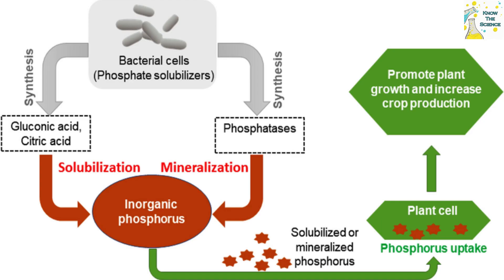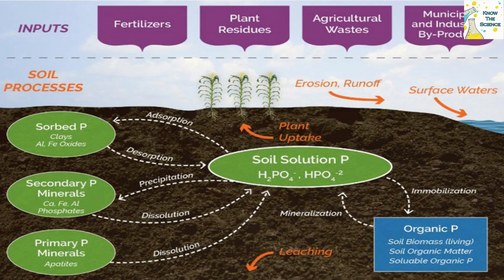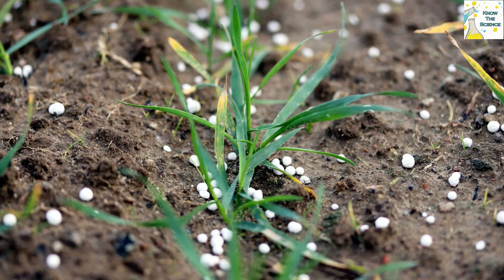Inorganic phosphorus can be chemically bound to soil particles, making it unavailable to plants. Desorption is the release of adsorbed phosphorus from its bound state into soil solution. Inorganic phosphorus compounds need to be soluble to be taken up by plants. This depends on the acidity of the soil — if soils are below pH 4 or above pH 8, phosphorus starts to become tied up with other compounds, making it less available to plants.